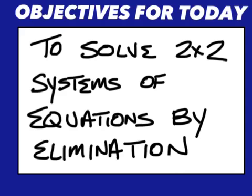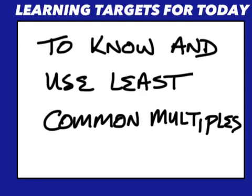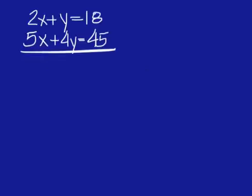Objective for today is to solve two-by-two systems of equations by elimination, to know and use least common multiples. Example: 2x plus y equals 18 and 5x plus 4y equals 45.